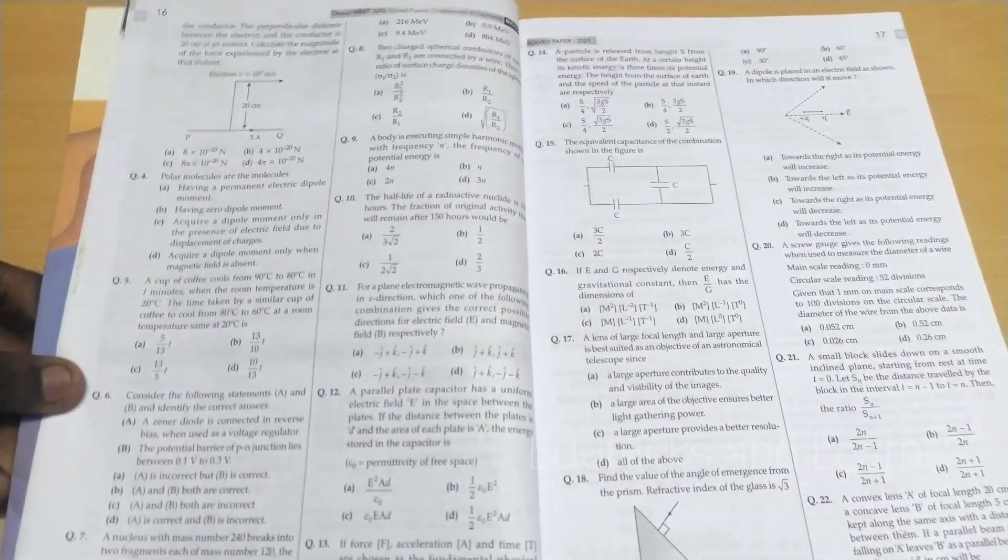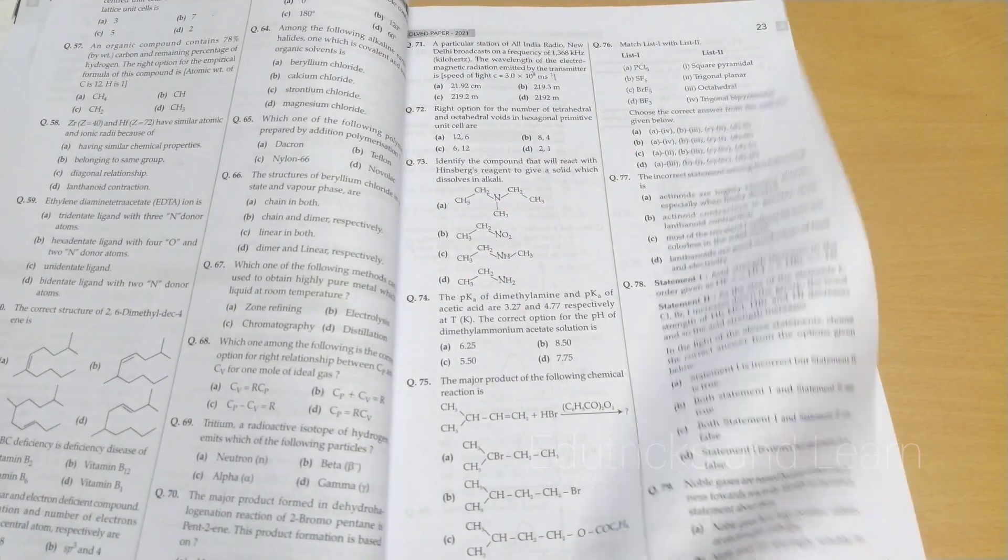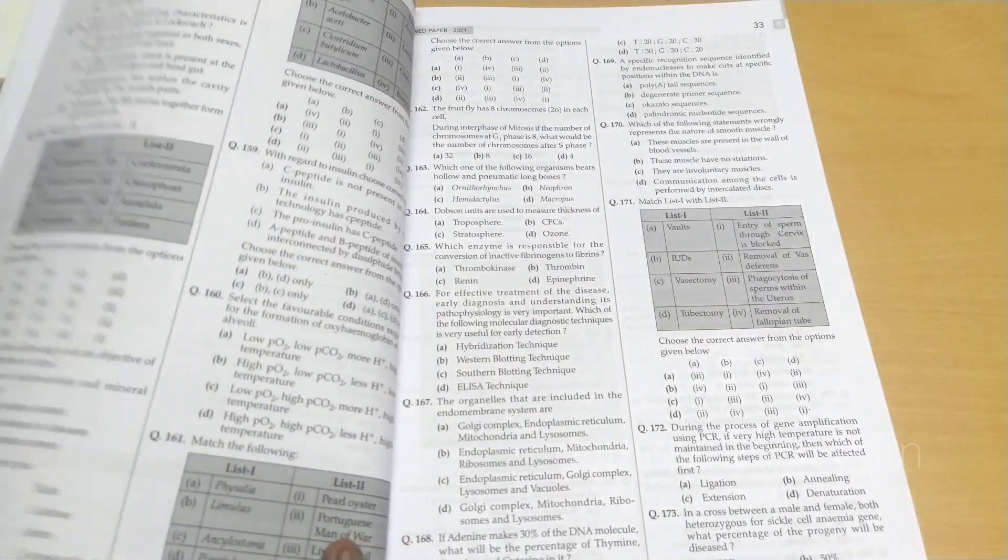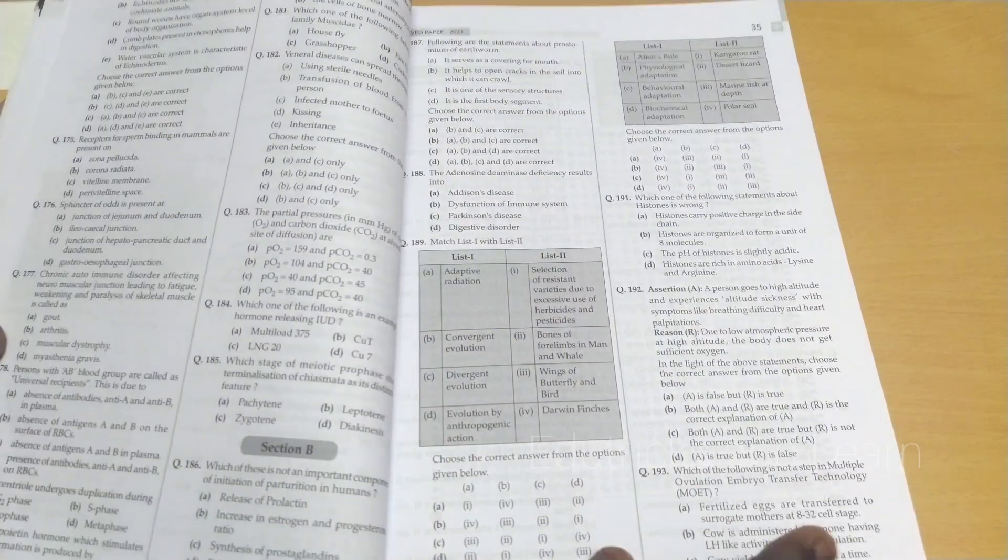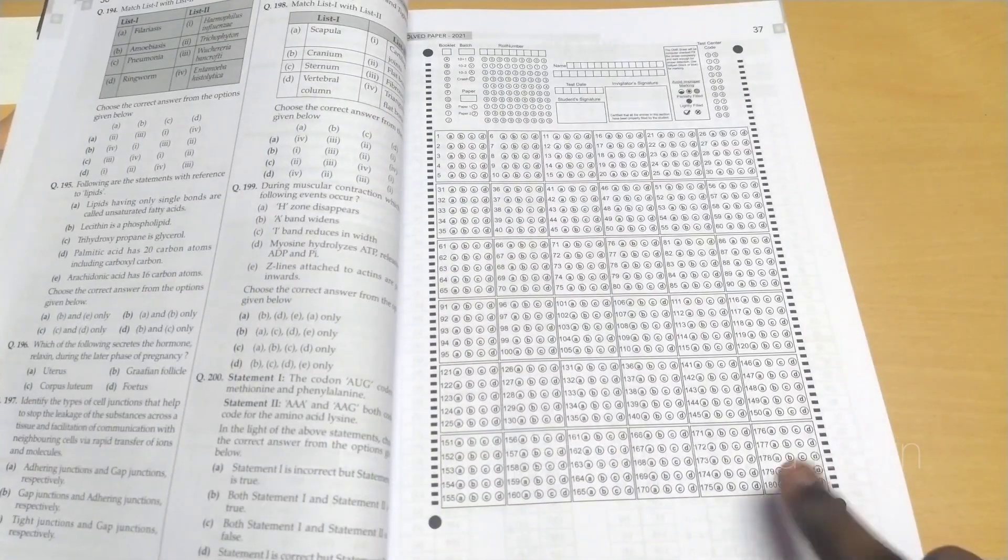Here they are covering physics, chemistry, along with biology. Biology has two sections: botany as well as zoology. This is a very good thing to solve previous year questions. The answers are also given after the OMR sheet, so in the OMR sheet itself you can answer.